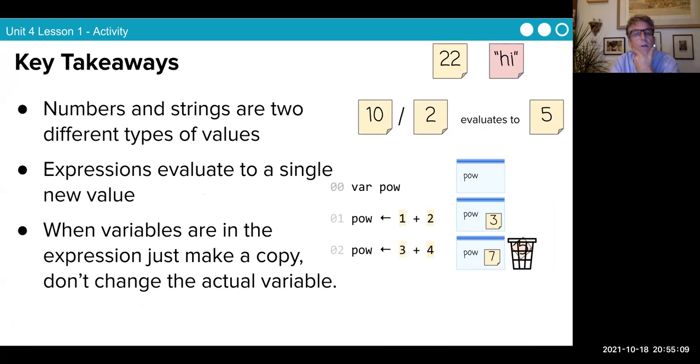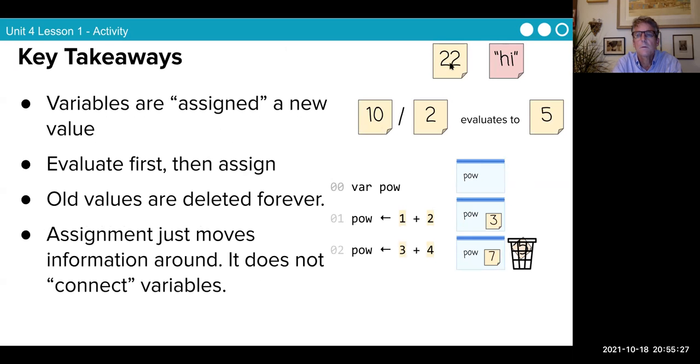Key takeaways. Numbers and strings are two different kinds of values. 10 divided by two evaluates to five. Evaluate first, then assign. 10 divided by two, first you evaluate that. That evaluates to five. Old values are deleted forever. They are thrown away in the trash can. Assignment just moves information around. It does not connect the variables.